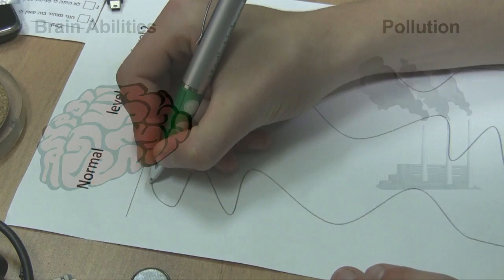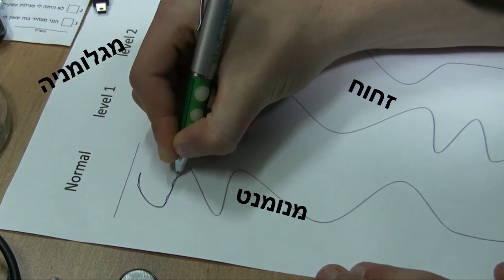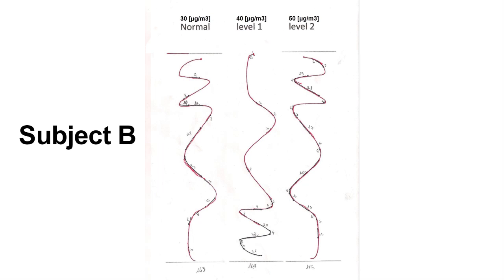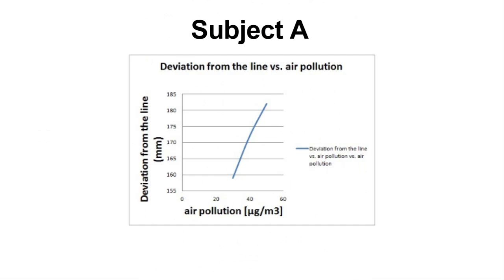In my experiment, I checked memory and motor skills at various pollution levels. After the experiment, I analyzed the data I got and calculated the average of all the volunteers. Then I created graphs based on this data.